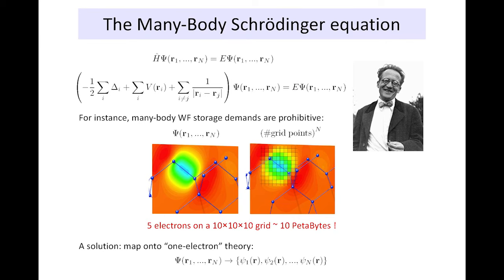Generally speaking, in our field of computational materials science, the thing we would like to solve is the many-body Schrödinger equation. I've put it up here, and it's a deceptively simple-looking equation — and for all its simplicity, it is thoroughly unsolvable. We have a Hamiltonian working on our many-body wave function that equates to the total energy of the system times this wave function.